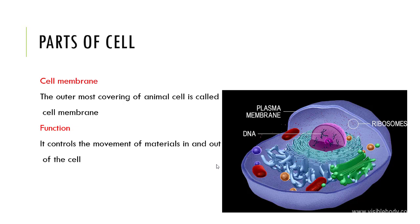The next is cell membrane. The outermost covering of animal cell is called cell membrane. It is also called plasma membrane. As you can see in this diagram, this is the cell membrane, which is also called plasma membrane. It is the outermost covering of animal cell, but in case of plant cell, it is next to the cell wall.